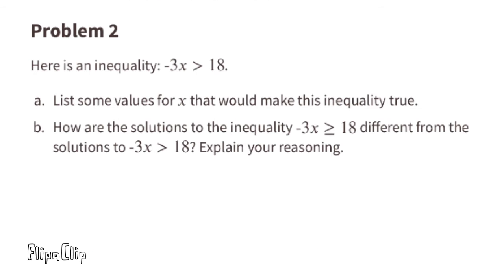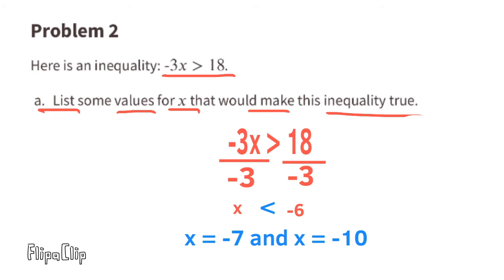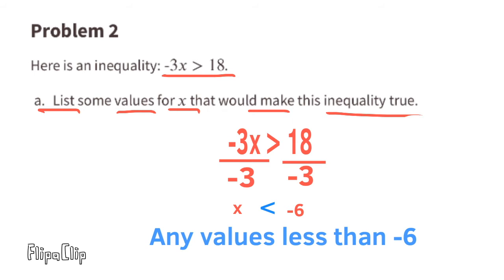Problem number two: the inequality is negative 3x is greater than 18. Part a — list some values for x that make this true. Divide both sides by negative 3 to get x by itself. Since we divided by a negative, we change the inequality sign from greater than to less than, leaving x is less than negative 6. So any values less than negative 6 work — for example, negative 7, negative 8, negative 9, or negative 10.